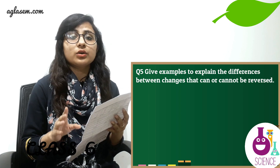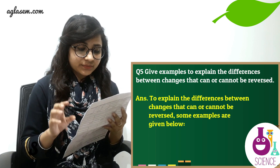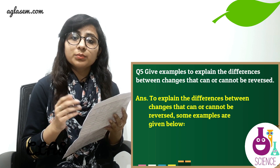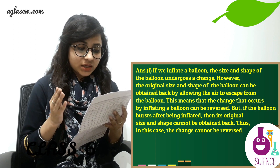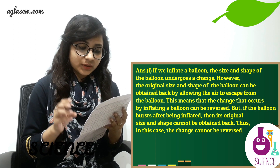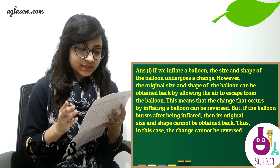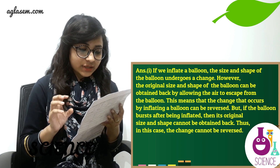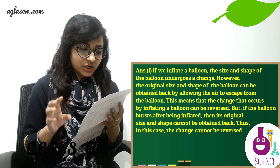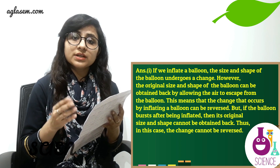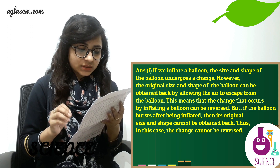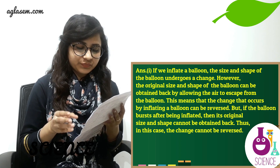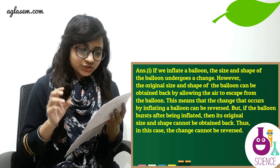Question number five: Give examples to explain the differences between changes that can or cannot be reversed. First example: if we inflate a balloon, the size and shape undergo a change, but the original size and shape can be obtained back by allowing the air to escape — so inflating a balloon is a reversible change. However, if the balloon bursts after being inflated, its original size and shape cannot be obtained back, so that change cannot be reversed.